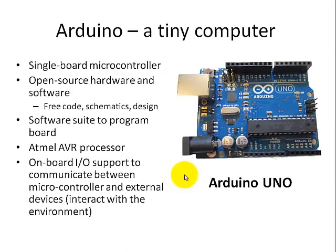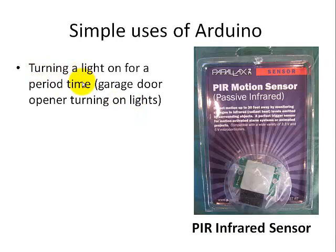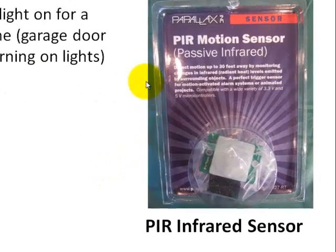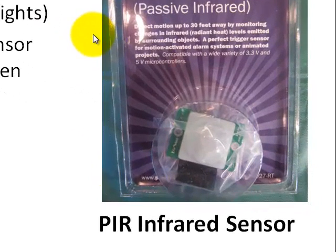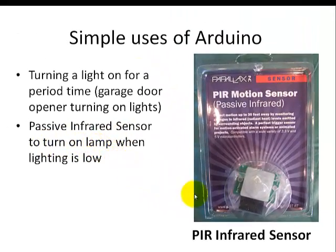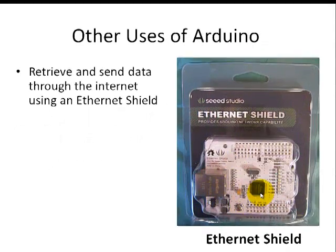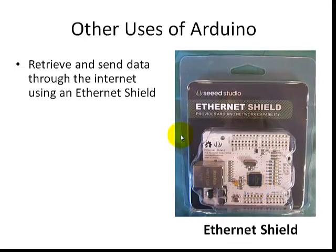Some of the simple uses of the Arduino include the use of a passive infrared sensor. You can use this to turn on a light for a period of time, such as a garage door opener to turn on the lights, or you can use the passive infrared sensor to turn on a lamp when the light is low. Other uses include the use of the internet shield, so you can retrieve and send data through the internet using this shield.